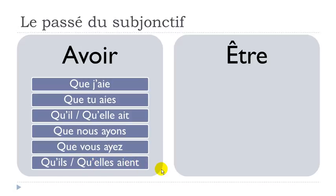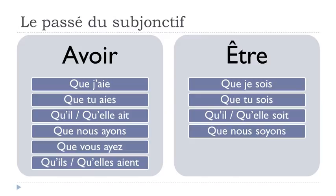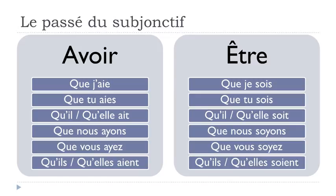And être goes like: que je sois, que tu sois, qu'il soit, qu'elle soit, que nous soyons, que vous soyez, qu'ils soient, qu'elles soient. Try to remember these by heart, because when constructing the passé du subjonctif, these are the first forms you will have to put.